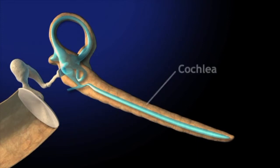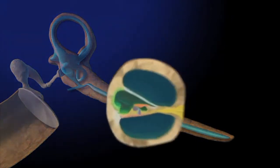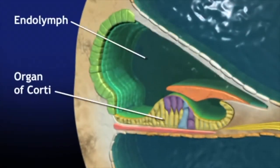You're looking at an uncoiled cochlea containing a basilar membrane floating in endolymph. The organ of corti, which contains the auditory receptors, sits upon the basilar membrane.